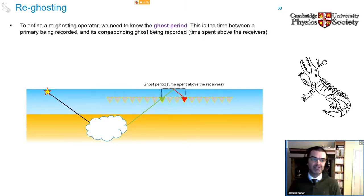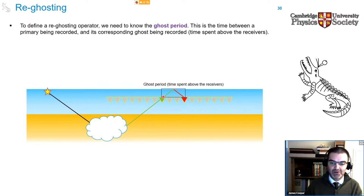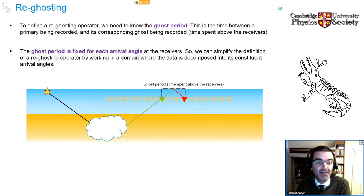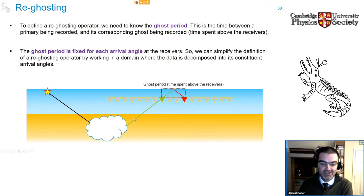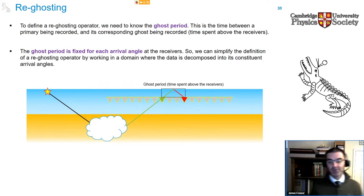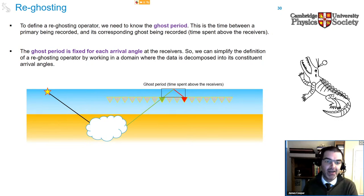To define a re-ghosting operator, we need to know the ghost period: the time between the primary recording and the corresponding ghost recording — i.e., the travel time spent above the receivers. The ghost period is fixed for every arrival angle. For a given arrival angle, regardless of where the ray path is recorded, the ghost period is the same. A different arrival angle has a different ghost period. We can simplify the definition of a re-ghosting operator by working in a domain where the data has been decomposed into its constituent arrival angles, which is why I'll spend a few minutes discussing the linear radon transform or tau-p transform.